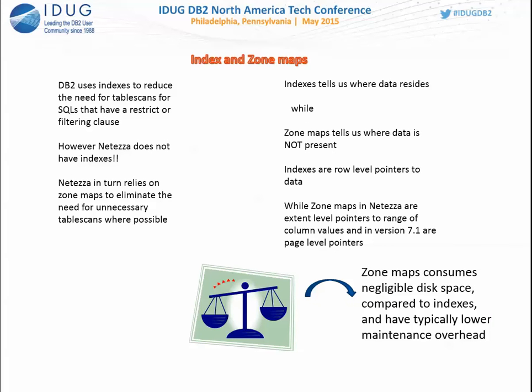Netezza does not have indexes — it doesn't need them. DB2 uses indexes to reduce table scans for SQLs with restrict or filtering clauses. Instead, Netezza relies on zone maps to eliminate unnecessary table scans wherever possible. Indexes tell you where data resides; zone maps tell you where data is NOT present. They are not equivalent — zone maps are extent-level pointers to ranges of column values. Zone maps consume negligible disk space compared to indexes and have lower maintenance overhead.